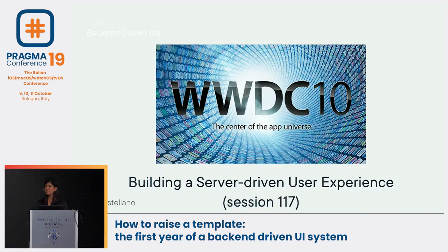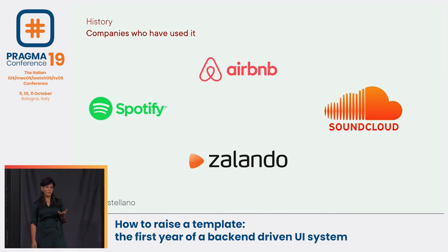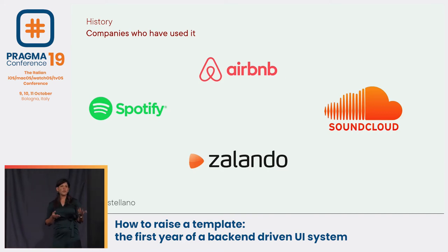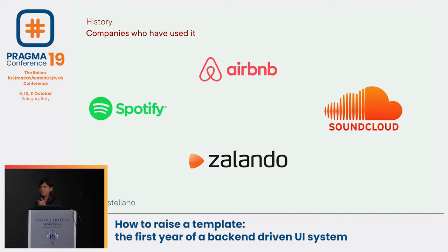We also looked at other companies using it. I have to give a shout-out to John Sandell — in 2015 I saw a talk about backend-driven UIs and the Hub Framework, which is what Spotify was using. Sadly it's now deprecated, but other companies are currently using backend-driven UI, such as Airbnb, Zalando, and SoundCloud. So Apple approved it and other companies are doing it — how do we do it our way?